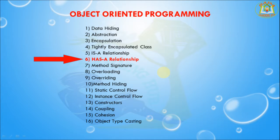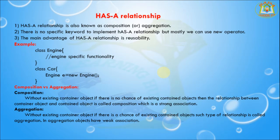Hello everyone, I am Shadashwara. Back with a new lesson. Today's session we are going to learn has-a relationship in object-oriented programming. Has-a relationship is also known as composition or aggregation. There is no specific keyword to implement has-a relationship, but mostly we can use the new operator.